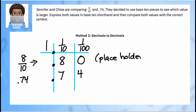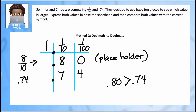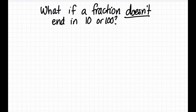Now I can compare clearly and see that 80 hundredths is the greater value. So: 80 hundredths is greater than 74 hundredths, or in the original statement, 8 tenths is greater than 74 hundredths. You can hit pause and jot this down. It doesn't matter which direction you go — you can change both to fractions or both to decimals. Do whichever makes the most sense to you. Personally, I love turning fractions to decimals.